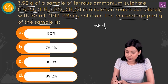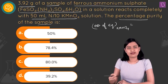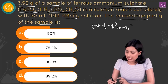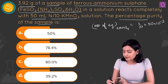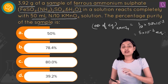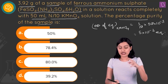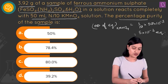Number of equivalents of KMnO4 = N × V = (1/10) × 50 × 10⁻³ = 5 × 10⁻³ equivalents. This is also the number of equivalents of Mohr's salt that we have.